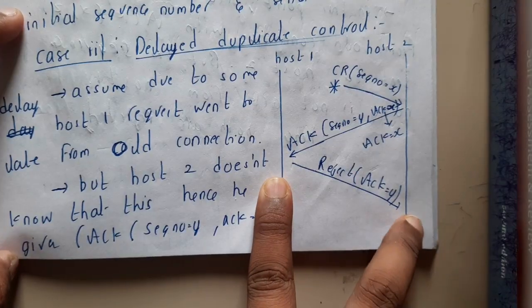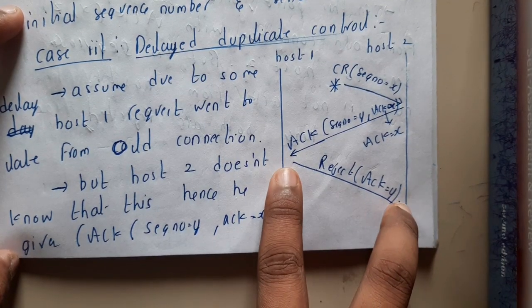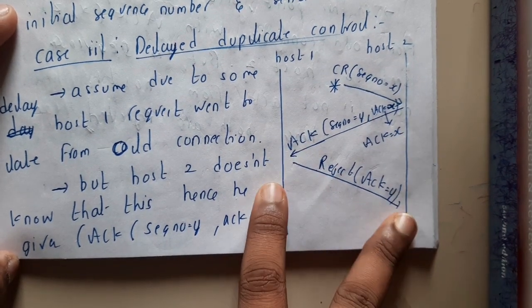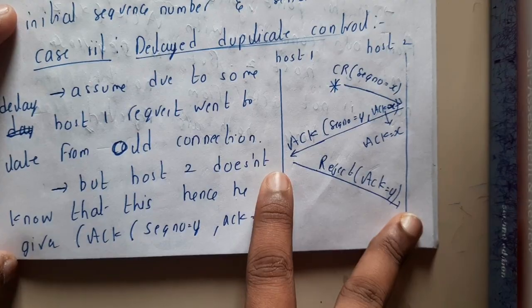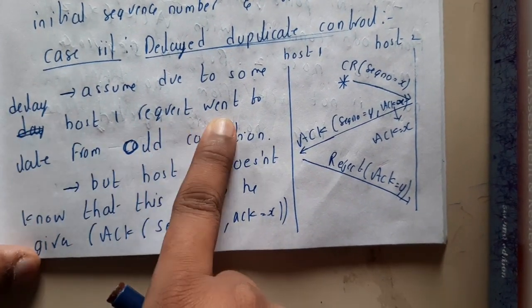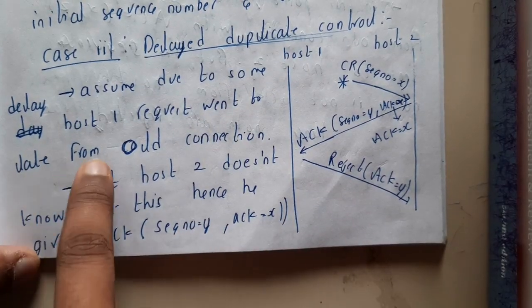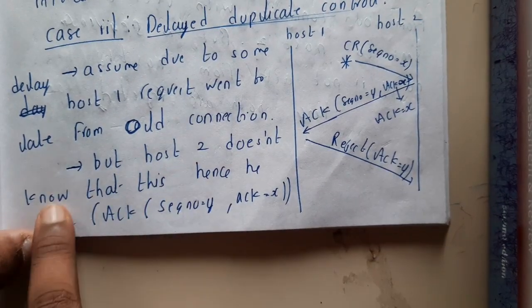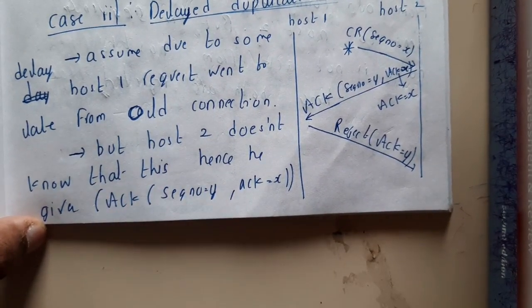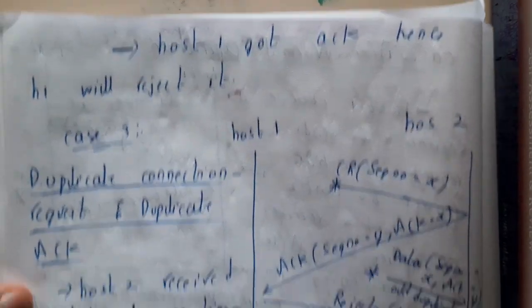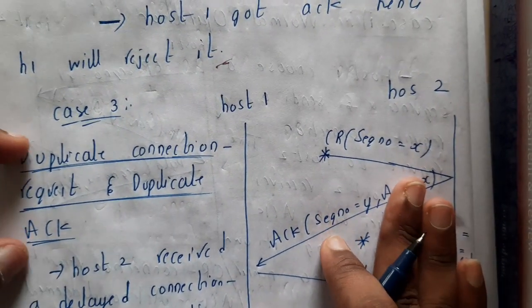To resolve this situation, Host 1 sends a reject packet — essentially saying 'I didn't send any data, you are understanding this in the wrong way.' It's like receiving a wrong call and saying 'sorry, this is a wrong call.' The old connection was closed but the delayed request reached Host 2, which sent an acknowledgement. Host 1 then responds with a reject message.